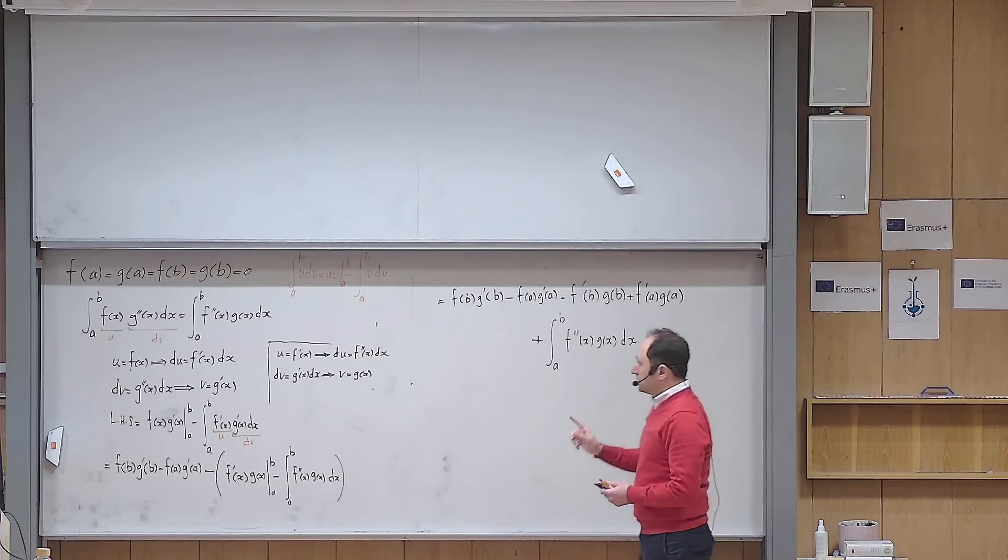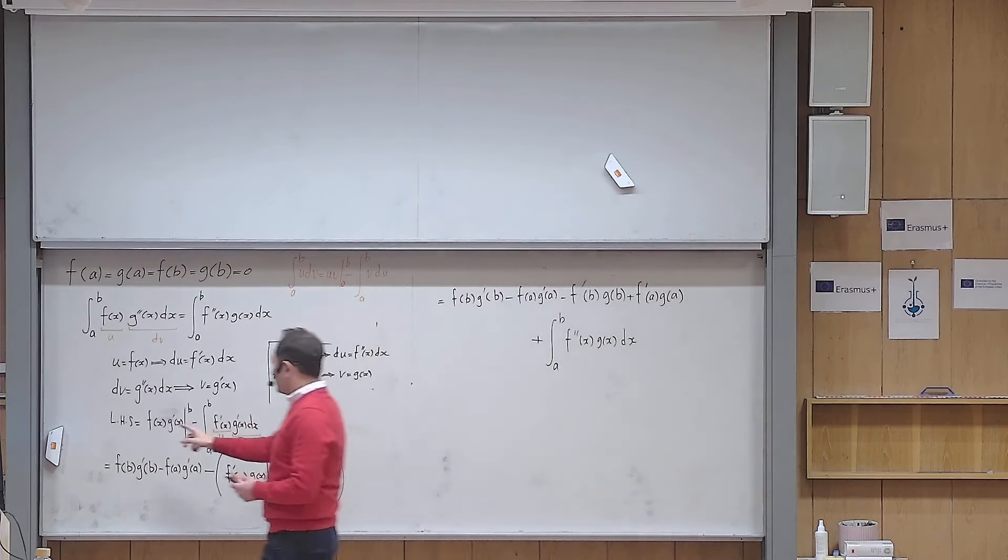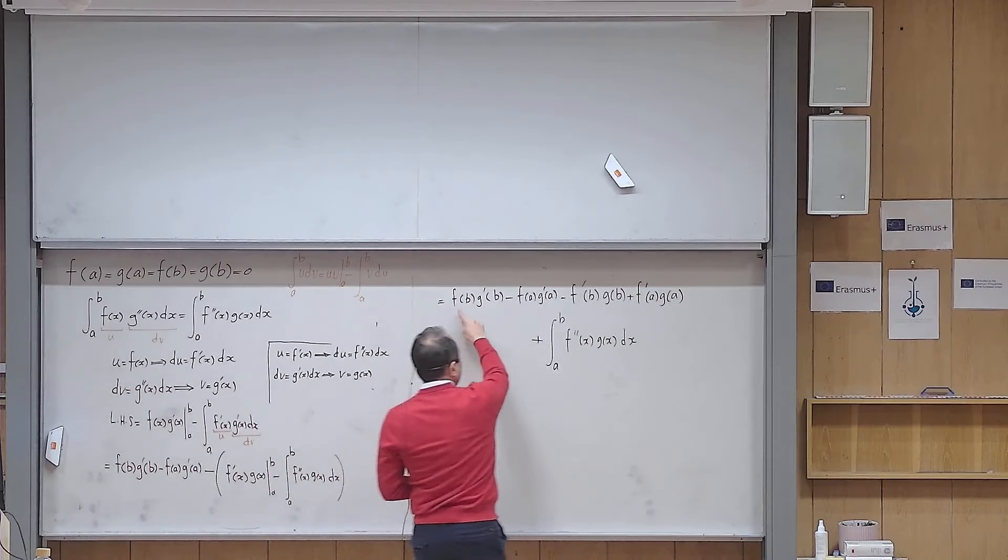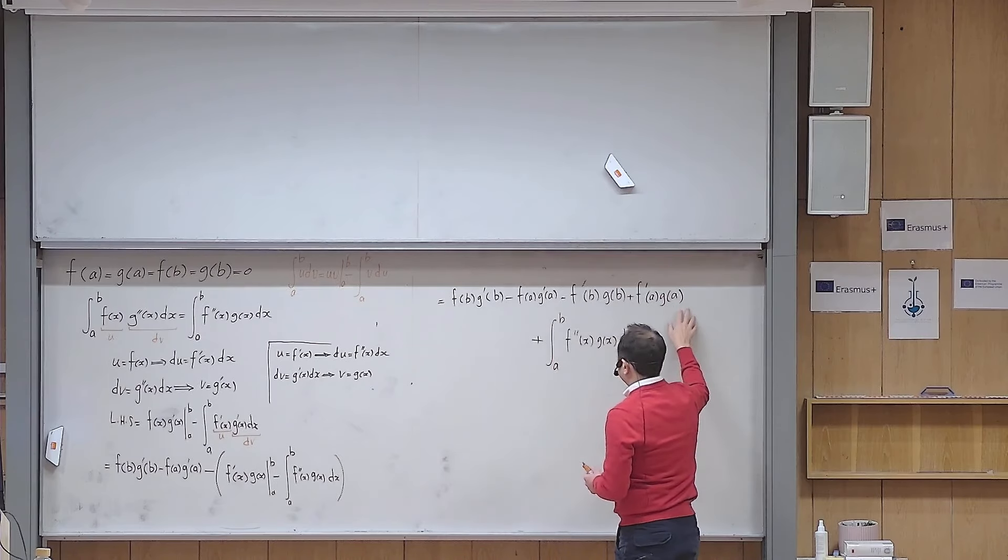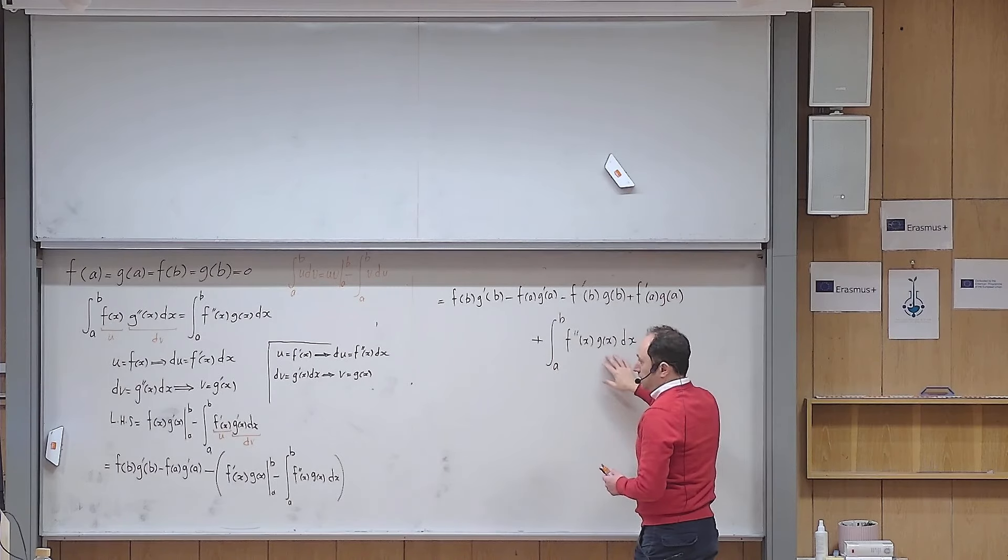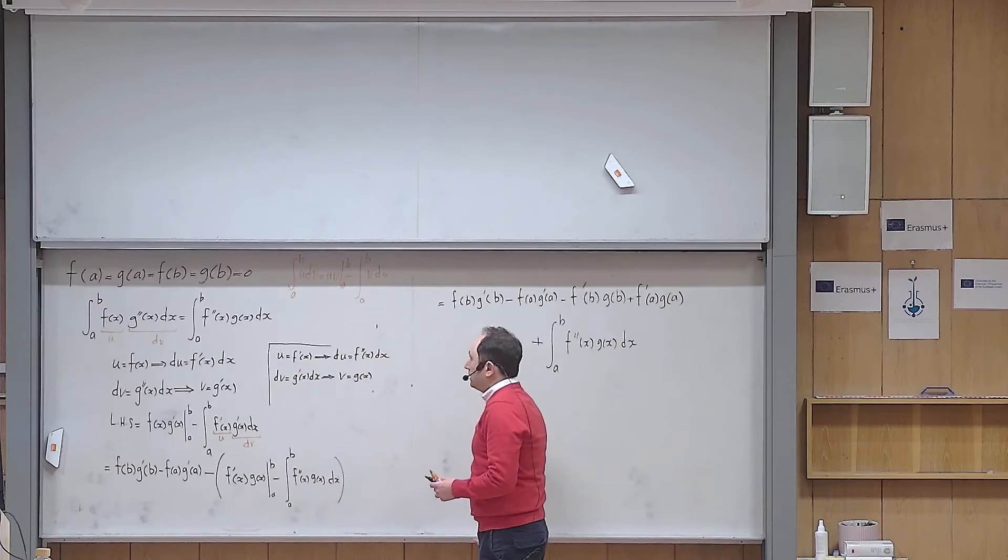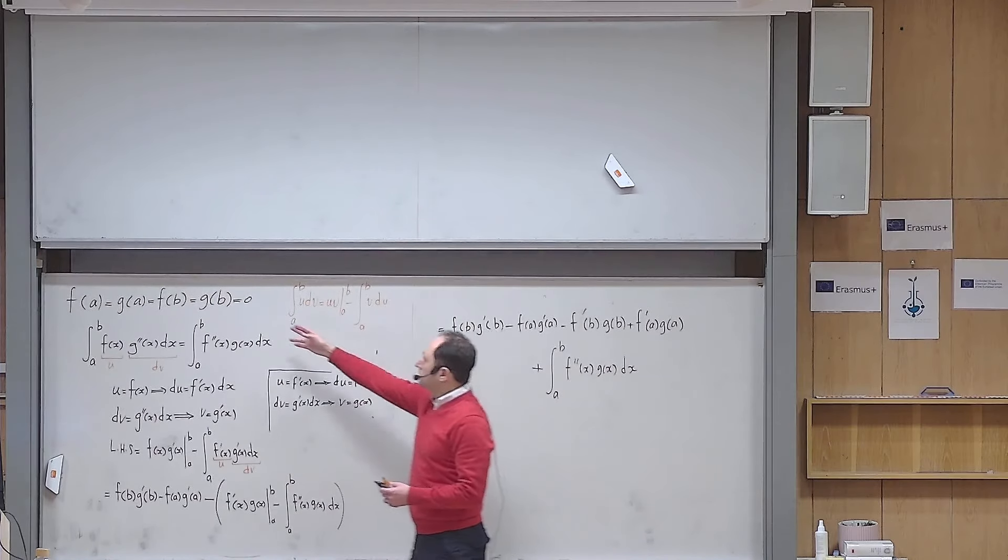So I was able to start from the left-hand side. So far, I have a big, what is so-called boundary term, plus this integral. This integral is exactly the one that I want to arrive here. But then, so far, I haven't used these conditions at all.